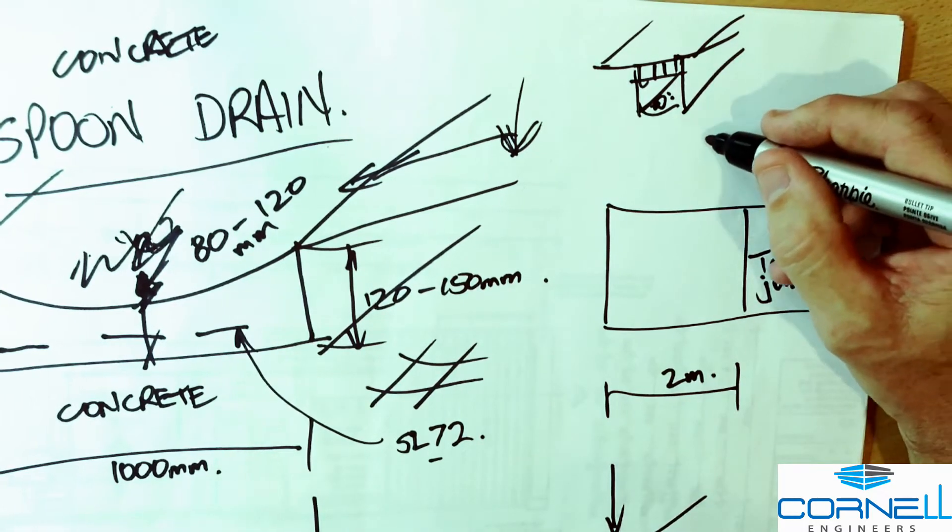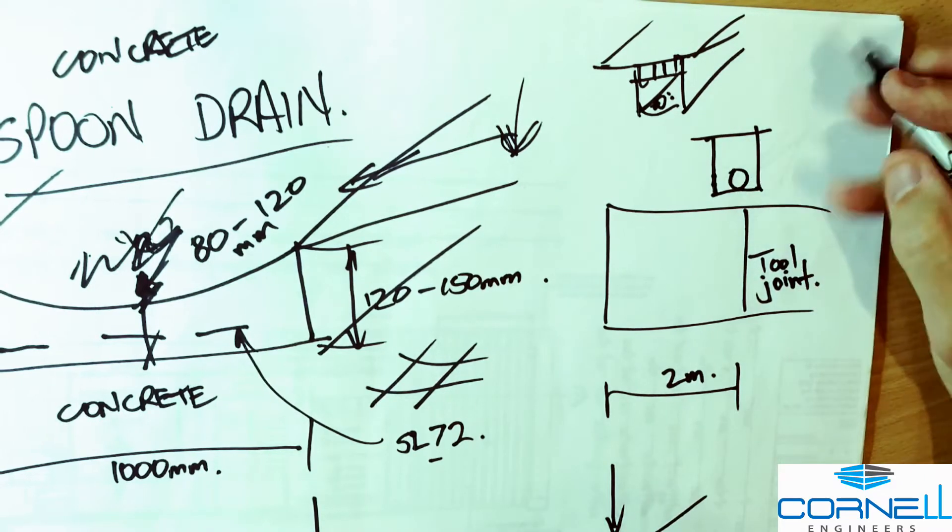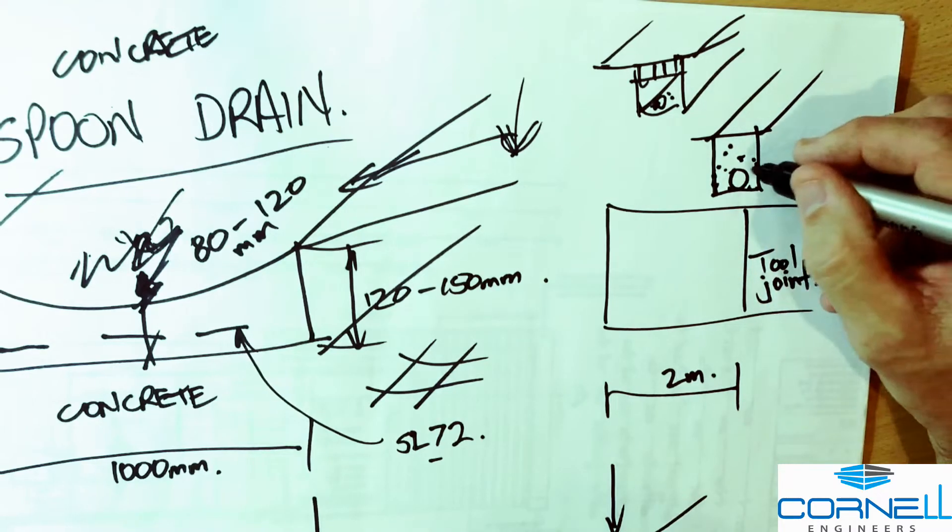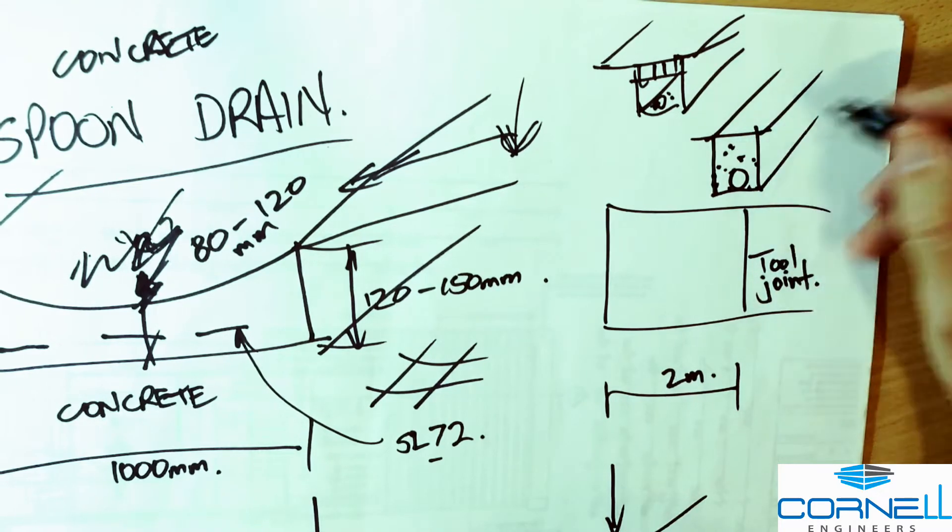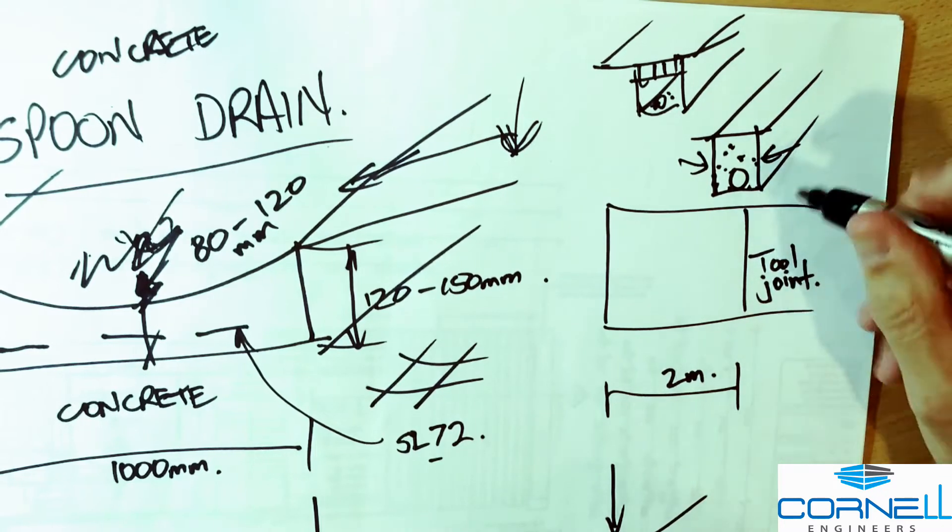The other kind of drain that we talk about a lot is agricultural drains, and these are ag pipe drains inside a gravel trench. These are a different kind of drain.